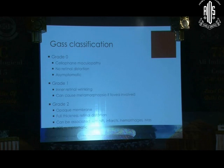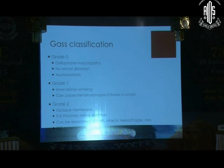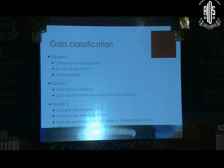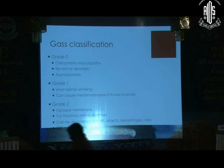There is no retinal distortion and patients are mostly asymptomatic — picked up on routine clinical examination. Grade 1 is where there is some inner retinal wrinkling and can cause metamorphopsia if the fovea is involved, but if it is extra-foveal it may be totally asymptomatic. Grade 2 is where the membrane has opacity — you can visibly see something lining the retinal surface with full thickness retinal distortion. This can be associated with nerve fiber layer infarcts and even microaneurysms and hemorrhages. Please remember that epiretinal membranes can be associated with microaneurysms — it does not mean the patient has some other vascular retinopathy. About 80% of these are symptomatic.